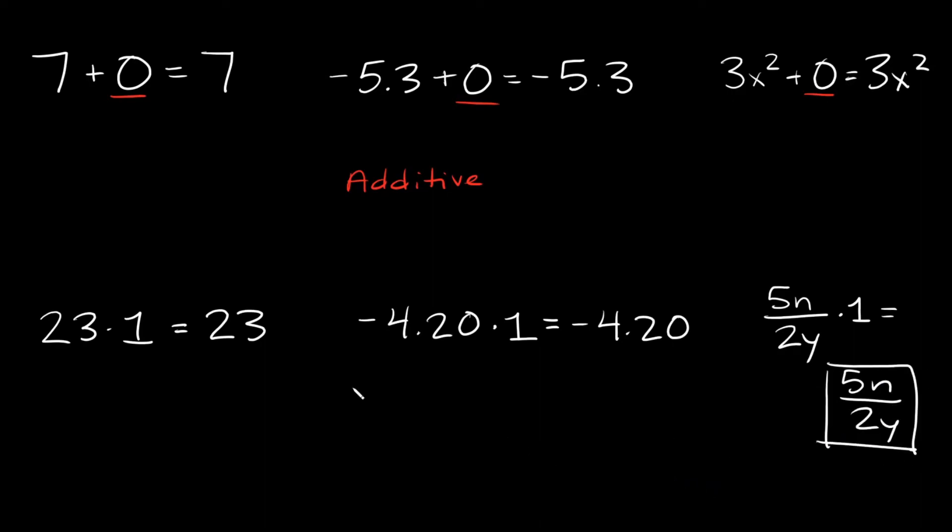Now again, you probably knew multiplying by one doesn't change your answer, but now you know the official term for it. Multiplying by one is known as the multiplicative property, and that is a mouthful. It's called the multiplicative property because whenever you multiply by one, it doesn't change your answer.